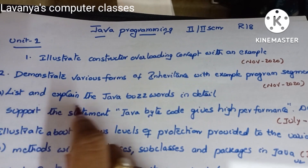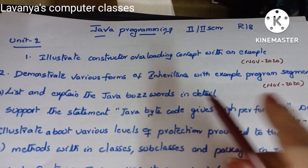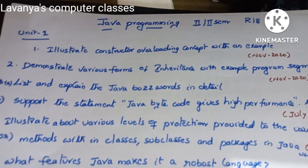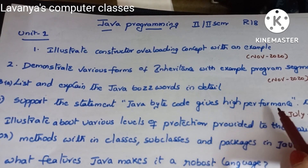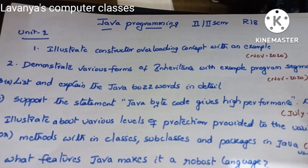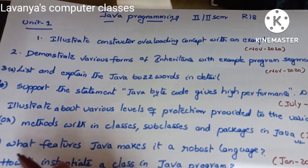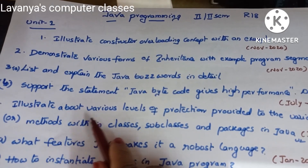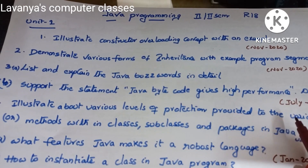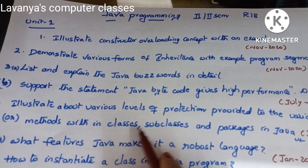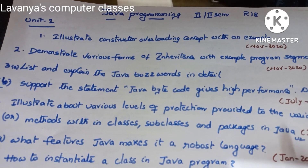The third question is 'List and explain the Java buzzwords in detail' and 'What are the keywords used in Java.' Next, 'Support the statement: Java bytecode gives high performance — discuss why Java gives high performance because of bytecode.' The fourth question is 'Illustrate about various levels of protection provided to variables or methods within classes, subclasses, and packages in Java,' which appeared in July 2021.